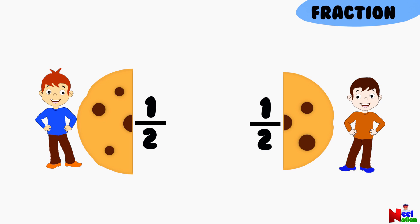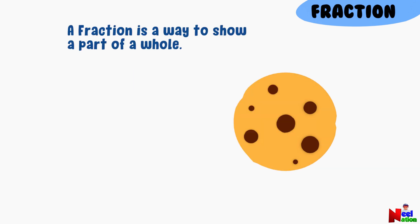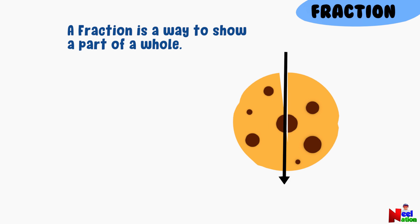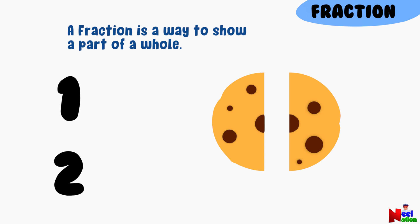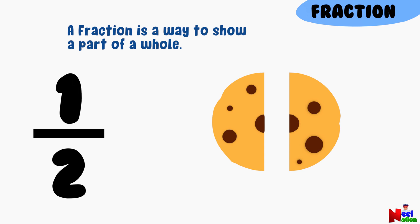Fraction? So, what is a fraction? In simple terms, a fraction is a way of showing a part of something. It has two numbers, one on top and one on the bottom, with a line between them. The top number in a fraction represents the number of parts you have or are considering. This is called a numerator.